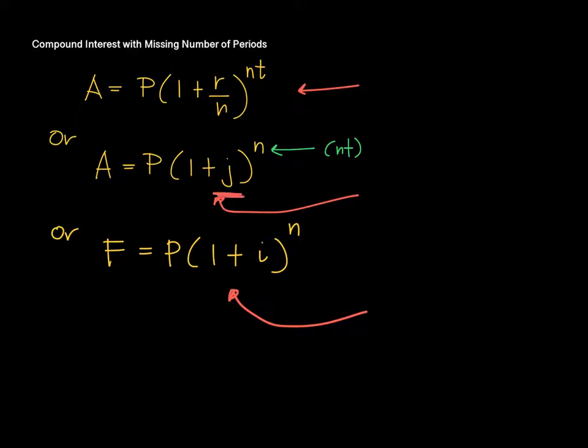wherein like J here is just the I in a different book. So, the N here is the NT that we know from A equals P times 1 plus R over N raised to NT. But these three equations are all the same. It's just that they rename the letters with a different one.